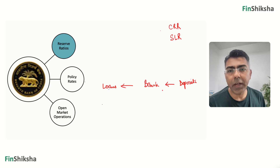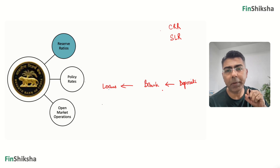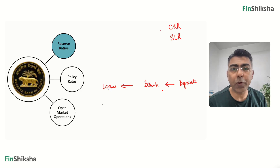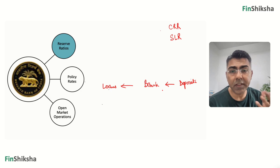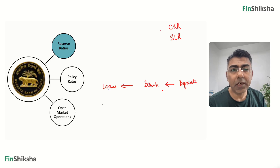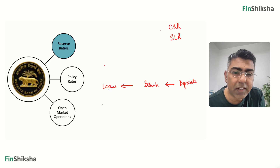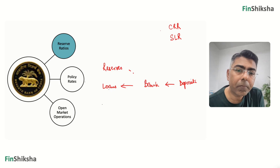This asset-liability mismatch could create a liquidity issue. If you've taken money as deposits and given out all of it as loans, tomorrow if a depositor turns up at the branch and says give me my money, maybe the bank doesn't have it. To avoid this liquidity crisis, RBI says you have to keep some part of the money in the form of reserves.